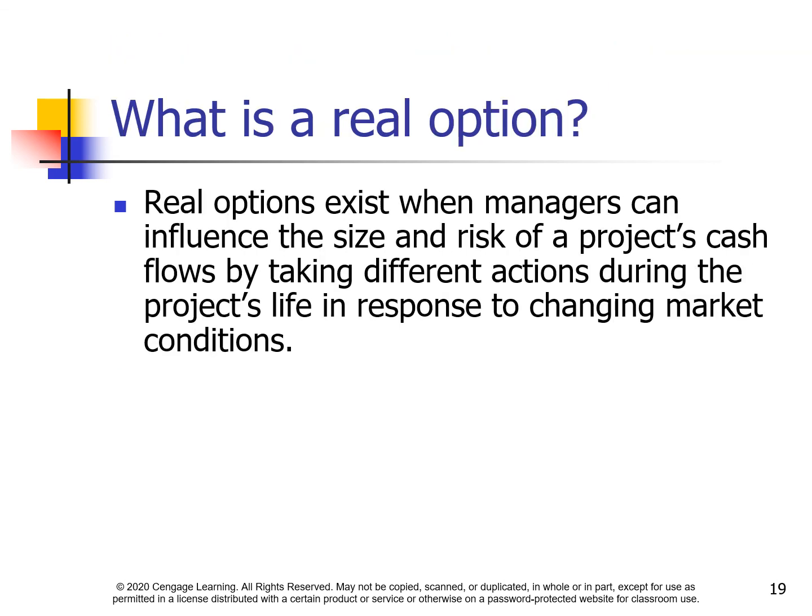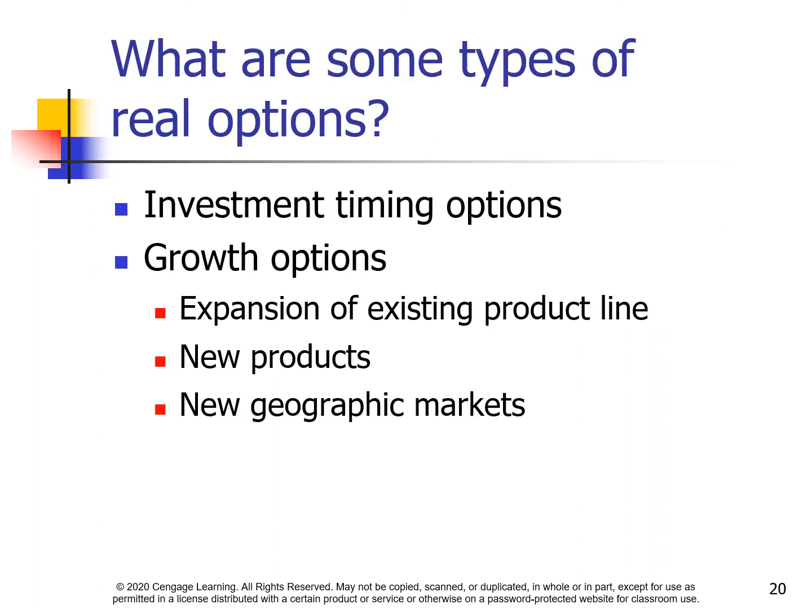What is a real option? Real options exist when managers can influence the size and risk of a project's cash flows by taking different actions during the project's life in response to changing market conditions. Some types of real options include investment timing options, growth options, expansion of an existing product line, new products, and new geographic markets.